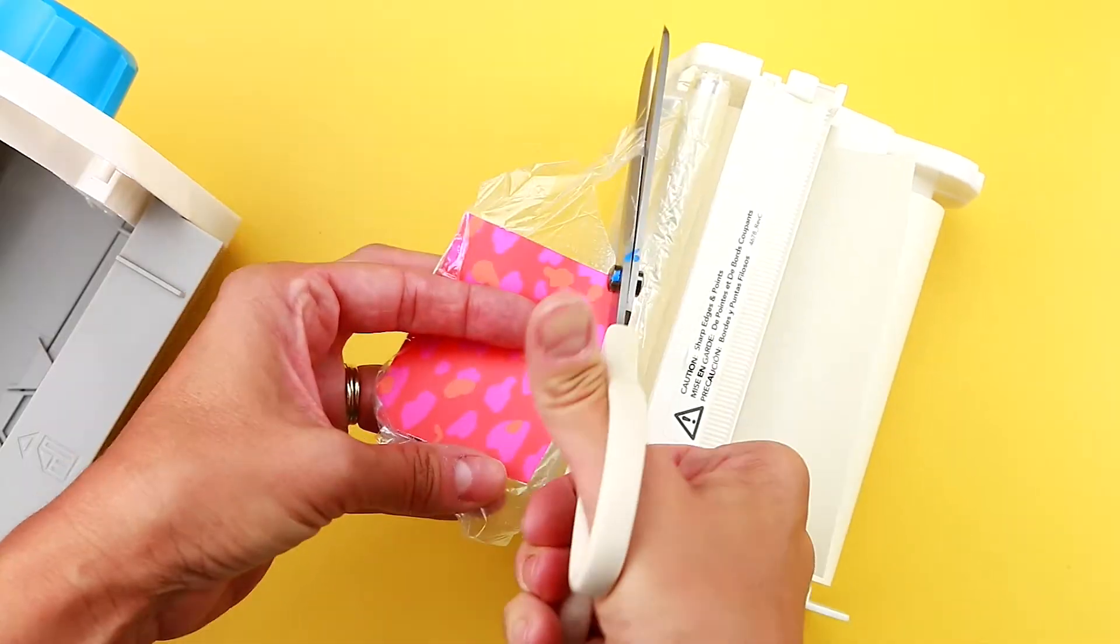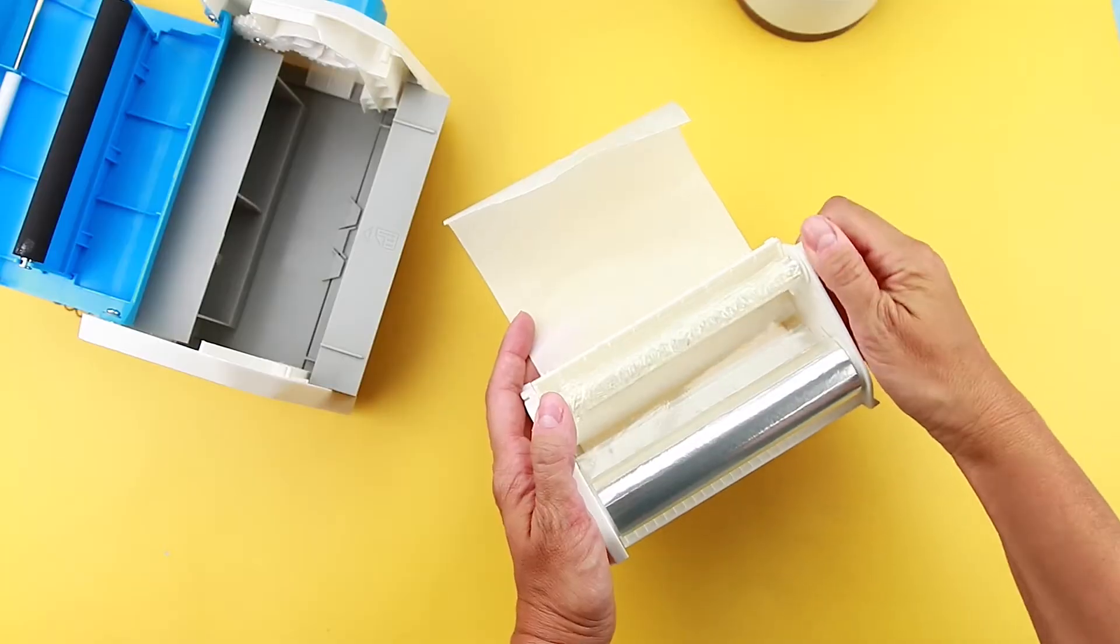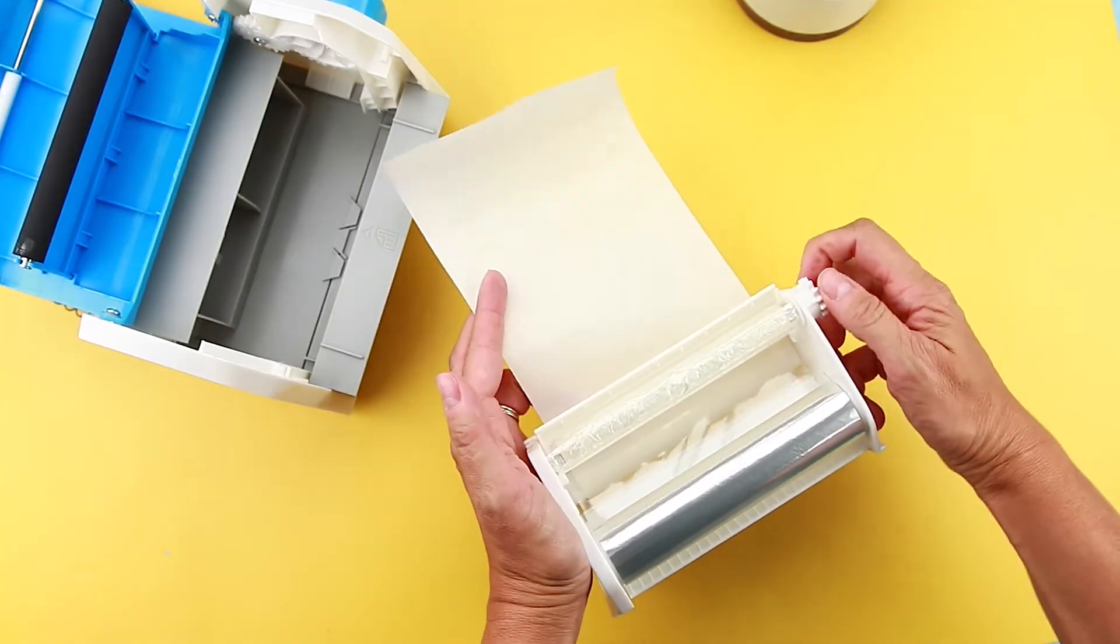Next, take the scrap paper off and wrap the film around the roller. Then turn the gear to advance the film around the roller two times so the film sticks onto itself.